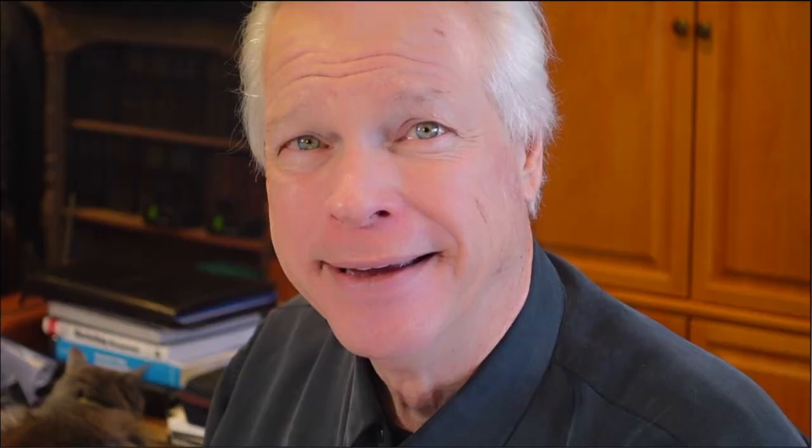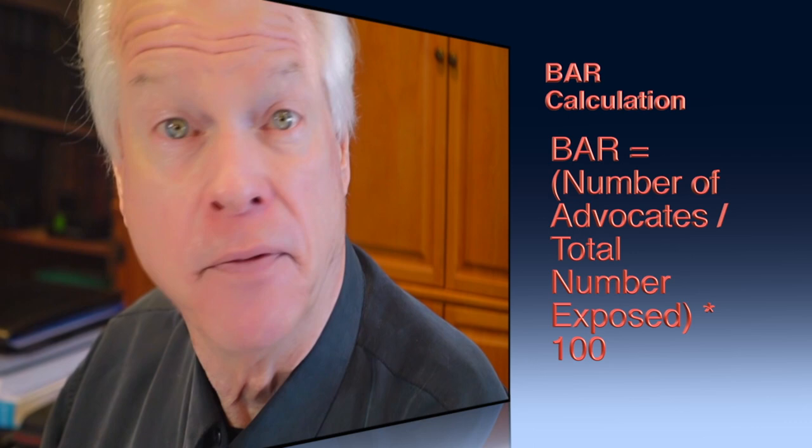BAR is calculated by dividing the number of customers who become advocates — promoting the brand or leaving positive reviews, etc. — by the total number of customers exposed to the marketing. The formula is: BAR equals number of advocates divided by total number exposed, times 100.